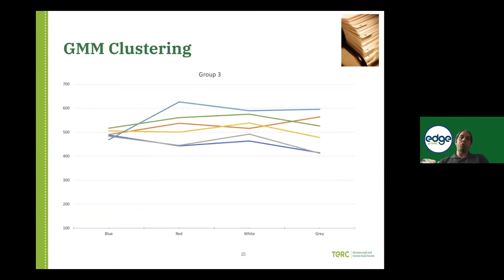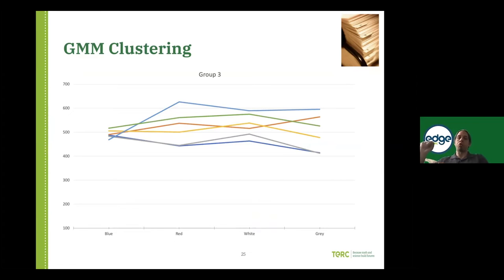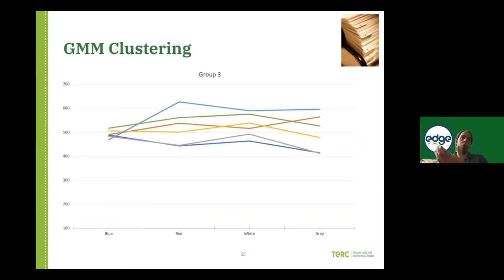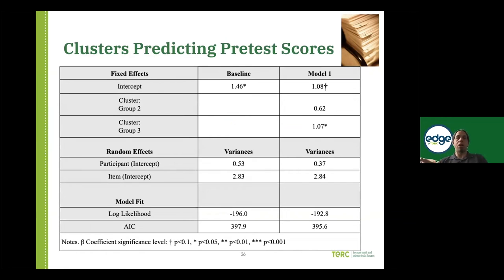Group three was the group that seemed to exhibit the longest fixations and a bit more of a trend of increase in gaze deployment across objects. The slope differences across the groups were not statistically significant, but the total gaze duration allocations were. We took these three clusters and ran an analysis that creates a baseline model looking at all the data without grouping, then adds the grouping to see whether we get a better fitting model.